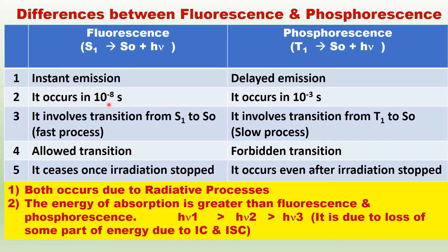Fluorescence occurs in about 10 to the power of minus 8 seconds — this is very short and takes place in a very short time. Phosphorescence takes place over a long time, so it is a slow process. The light is emitted after some time in phosphorescence, whereas in fluorescence the light is emitted immediately.